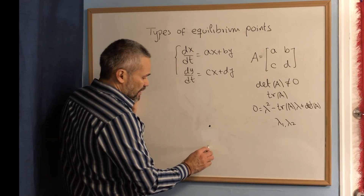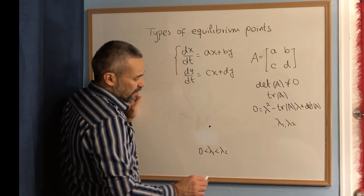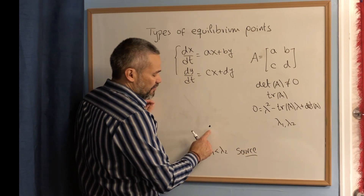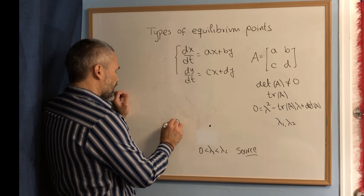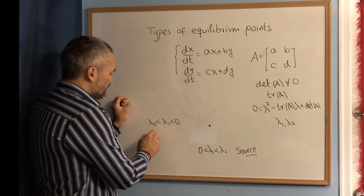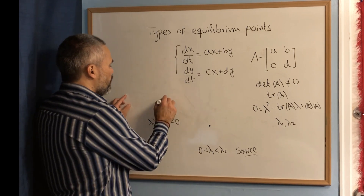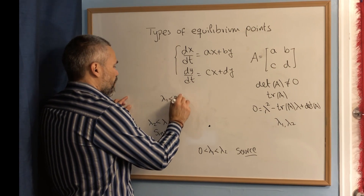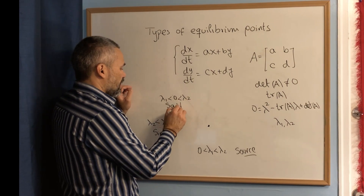For example, if lambda 1 and lambda 2 are both different and positive, then we have what is called a source. If both eigenvalues are negative — say lambda 1 is smaller than lambda 2 — then we have what is called a sink. If one eigenvalue is positive and the other one is negative, then the equilibrium point is called a saddle.